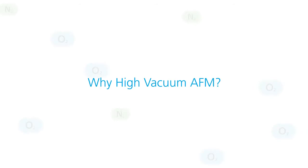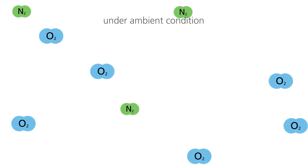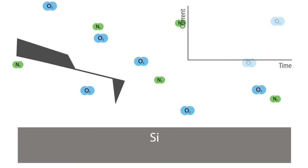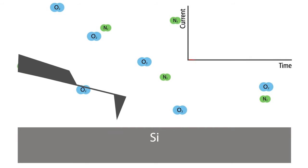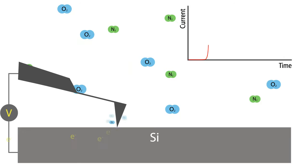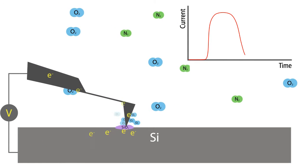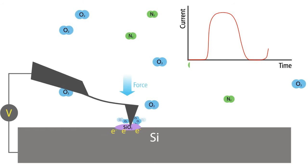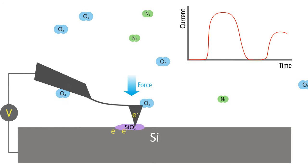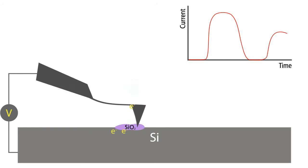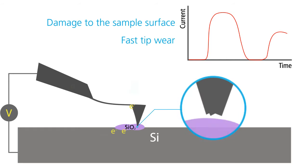Under ambient conditions, highly doped 3D semiconductor devices are vulnerable to contamination and oxidation. This oxidation requires the AFM to apply greater force from tip to sample in order to obtain a viable SSRM image. However, this increased tip-sample force causes additional problems: damage to the sample surface, and fast tip wear that makes acquisition of accurate high-resolution images very difficult.